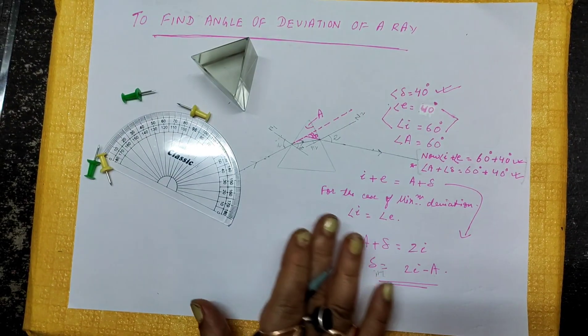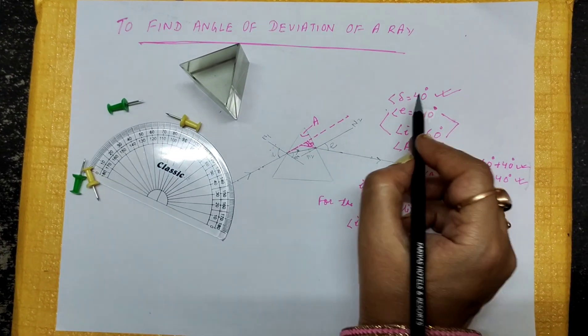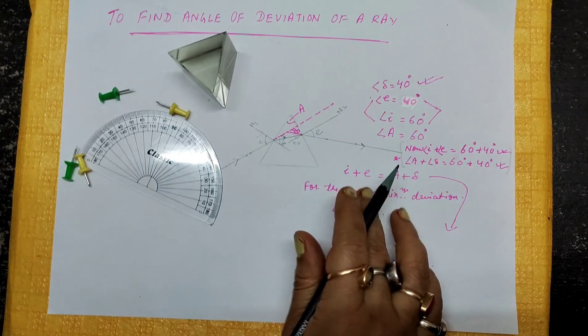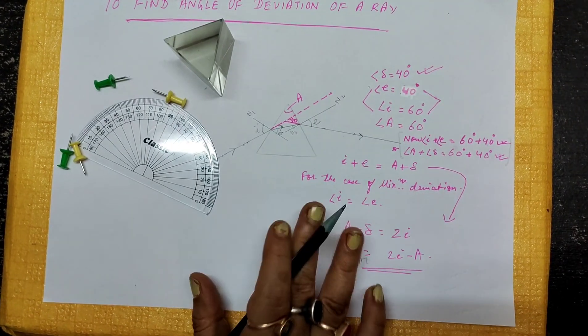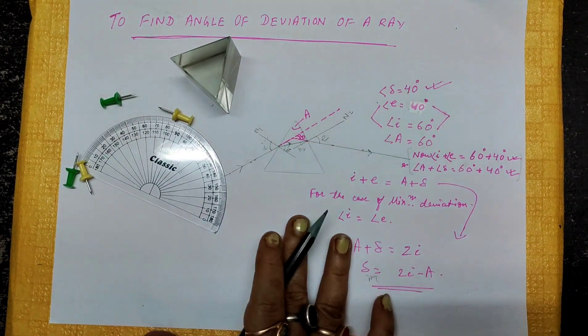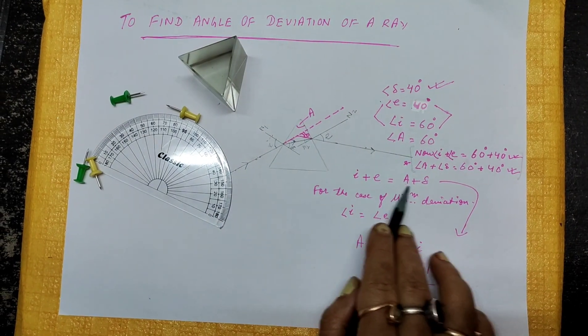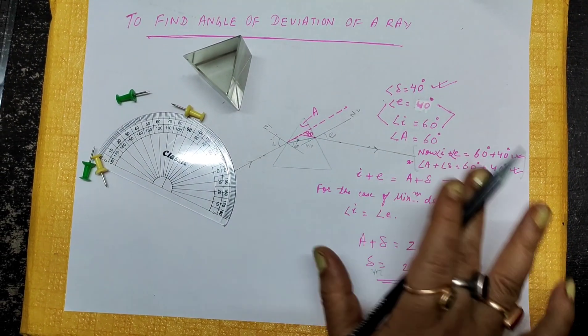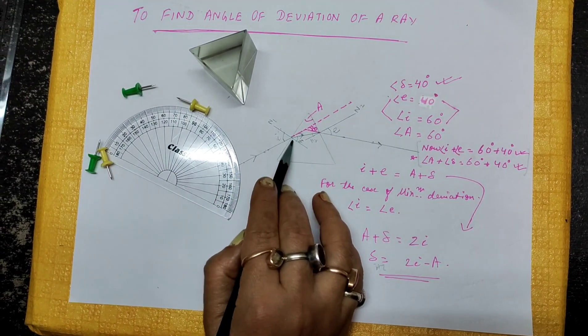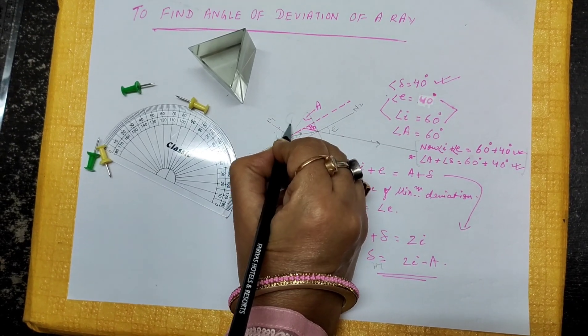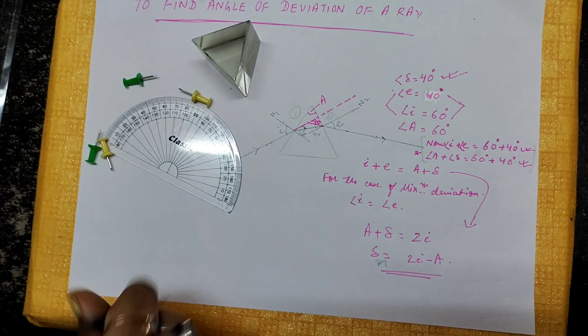To sum up: we have done the measurement of the angle of deviation and obtained 40 degrees. We have also verified the relation I + E = A + delta. There are two refractions happening at surface 1 and at surface 2. I hope the experiment was very clear to you all. If there is any doubt, please write in the comment box. Thank you.